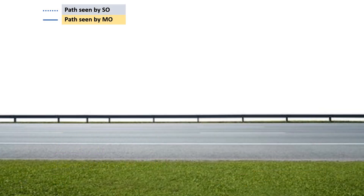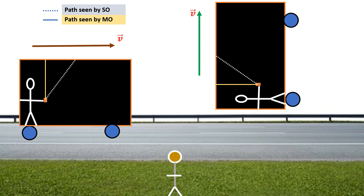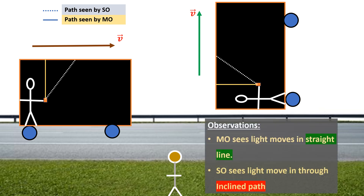Now let's move on to special relativity. Let us take an observer in a car travelling at a constant velocity. The observer in the car shines a torchlight vertically upwards as it passes an observer who is stationary relative to the road. According to special relativity, the observer on the road will see the light move through an inclined path, while the observer in the car will see the light go straight up. If we rotate this frame 90 degrees, this is what we get. So special relativity leads us to conclude that for a frame moving at a constant velocity, the observer in that frame sees light trace a straight line, while a stationary observer sees the same light trace an inclined path.